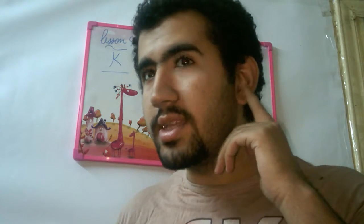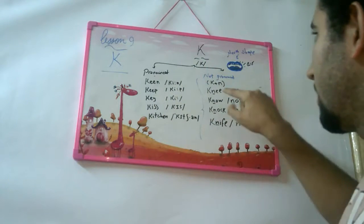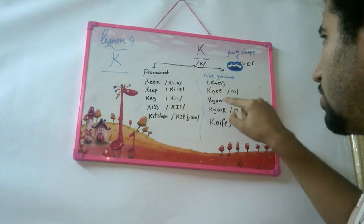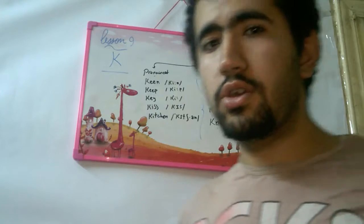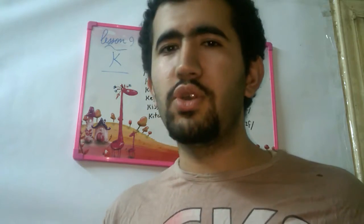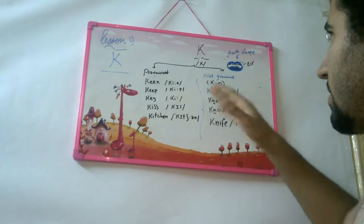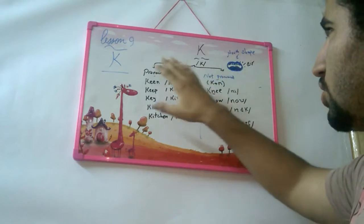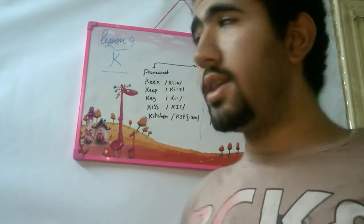Now, when it's not pronounced, you can't hear it. For example: knee, knock, knife — could you hear the K? No. So in these words the K is not pronounced. This gives us two rules for the letter K.